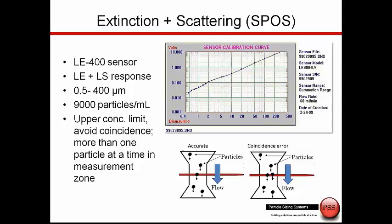The LE400 sensor, which is a combination of light extinction and light scattering sensor, can measure from 0.5 to 400 microns at concentrations up to 9,000 particles per ml.